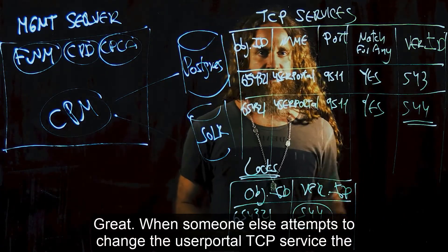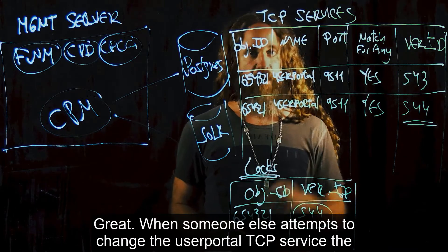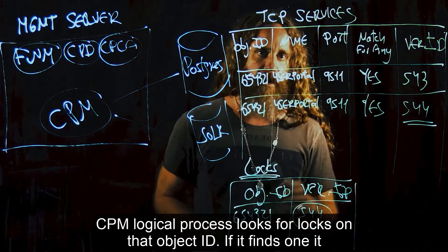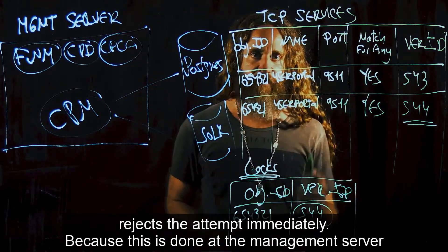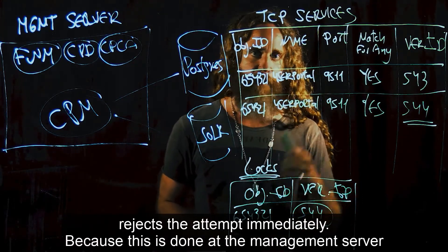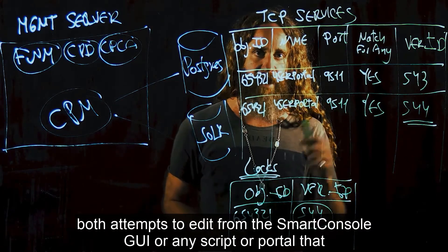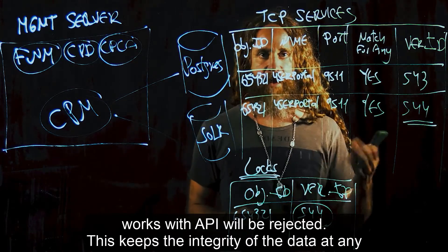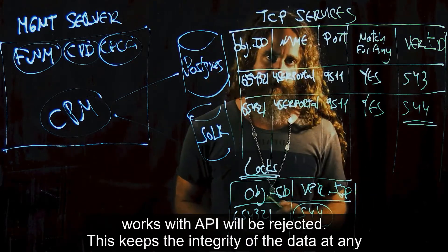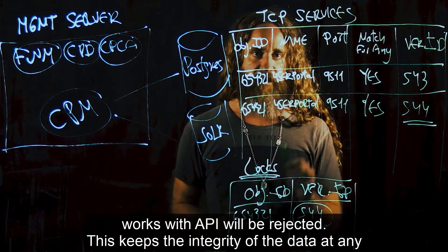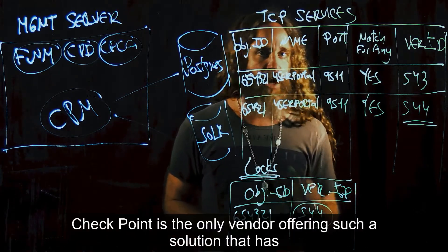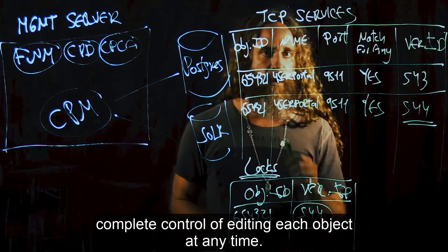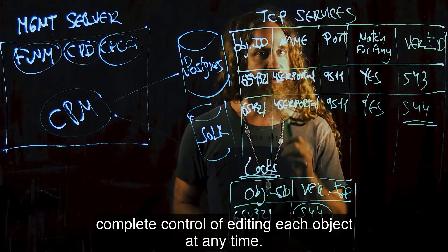The LOCKS table does not actually have a specific version. When someone else attempts to change the user portal TCP service, the CPM logical process looks for locks on that object ID. If it finds one, it rejects the attempt immediately. Because this is done at the management server, both attempts to edit from the Smart Console GUI or any script or portal that works with the API will be rejected. This keeps the integrity of the data at any given time. Checkpoint is the only vendor offering such a solution that has complete control of editing each object at any time.